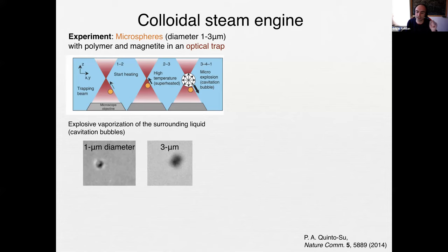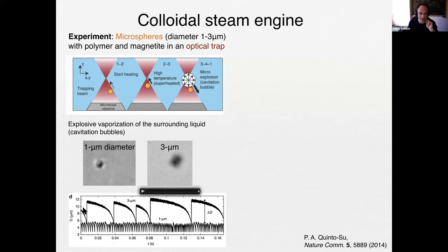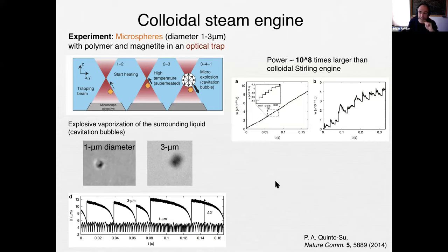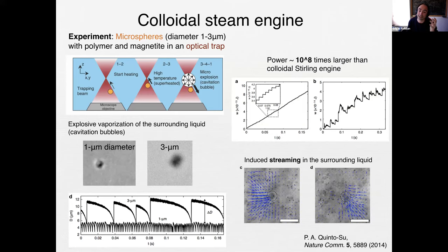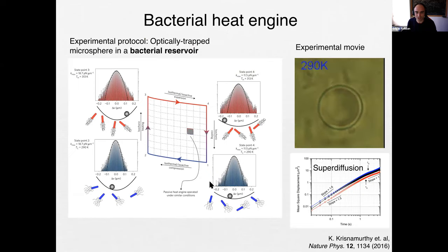The small particles do cycles faster but move a smaller distance and thus less work is done. The power is 10⁸ times larger than in the Stirling realization — really very powerful. However, this motion induces streaming in the surrounding fluid, so the bath changes, and you cannot describe this with a simple Langevin equation — you need more complicated physics. That's why stochastic thermodynamics was not used in that paper.